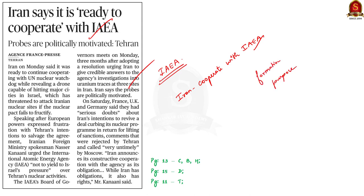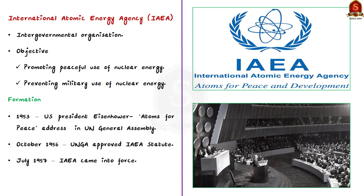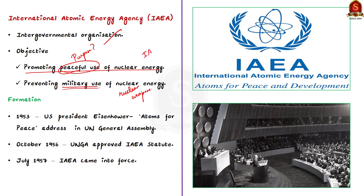The International Atomic Energy Agency is an intergovernmental organization. It seeks to promote the peaceful use of nuclear energy and apart from this it prevents the use of nuclear energy including nuclear weapons for military purposes. The IAEA is one of the United Nations agencies — it is an autonomous organization but it functions within the United Nations.